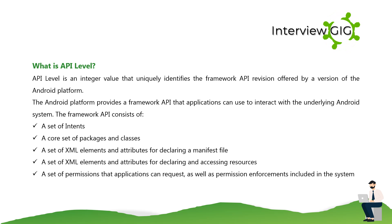What is API level? API level is an integer value that uniquely identifies the framework API revision offered by a version of the Android platform. The framework API consists of a set of intents, a core set of packages and classes, a set of XML elements and attributes for declaring a manifest file, a set of XML elements and attributes for declaring and accessing resources, and a set of permissions that applications can request, as well as permission enforcement included in the system.